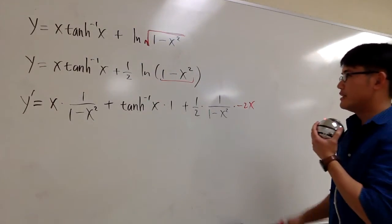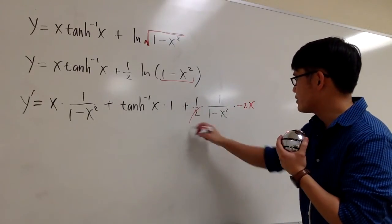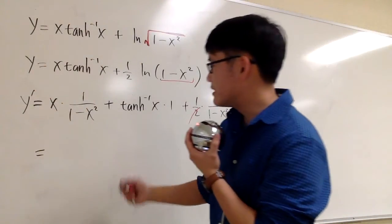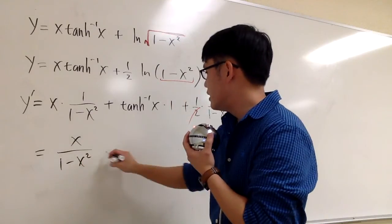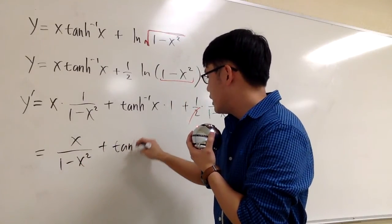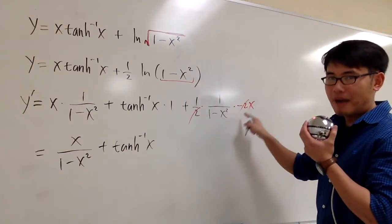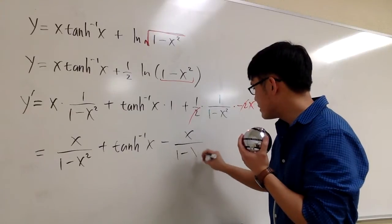Now the question is just, is there anything that we can cancel out? This part, we can cancel the two. And that's just pushing it down nicely. This is x over 1 minus x squared. This is plus inverse tangent x. And this right here is a minus. Minus x over that. So we have minus x over 1 minus x squared.